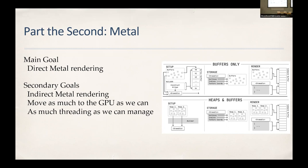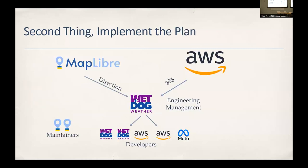We also wanted to move as much logic to the GPU as possible. Things like changing opacity on the fly as you zoom in, or changing line widths — most of that should be done on the GPU, but in MapLibre Native a lot of it is done on the CPU, causing choke points. And we wanted to do as much threading as we can — threading is very important on modern mobile devices.